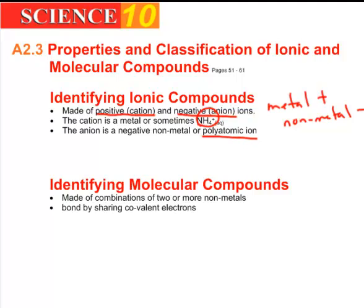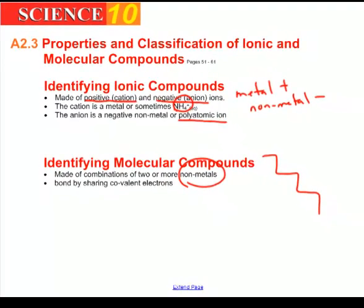Molecular compounds, by contrast, are made of combinations of two or more non-metals. That means to say, on your periodic table, they come from the right-hand side, this is where the non-metals are. They're made of two or more combinations of those, and they bond by sharing their covalent, or their outer, electrons to get their magic number of eight.